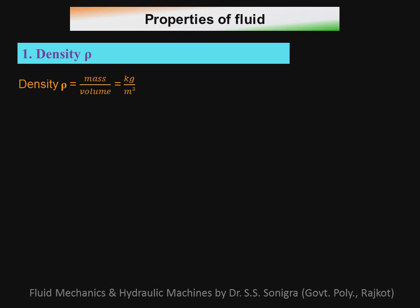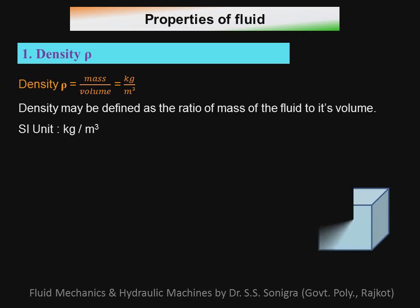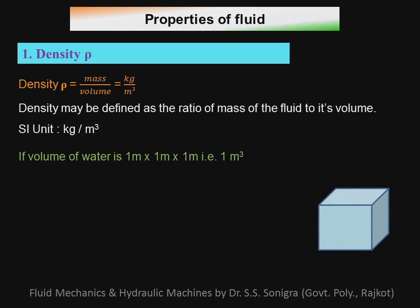The first important property of fluid is density, denoted by rho. Density is defined as the ratio of mass to volume of a fluid. The unit is kilogram per meter cube. To understand the concept of density, let me take a water tank having length, height and width of 1 meter each.